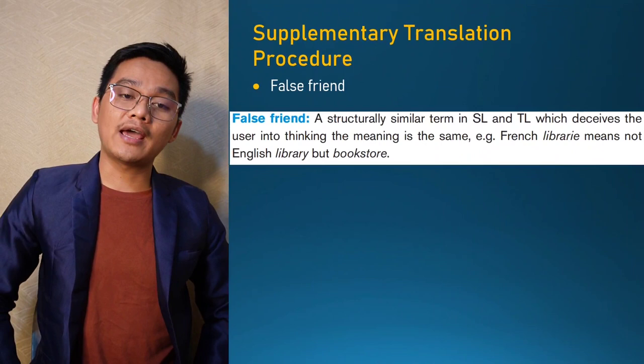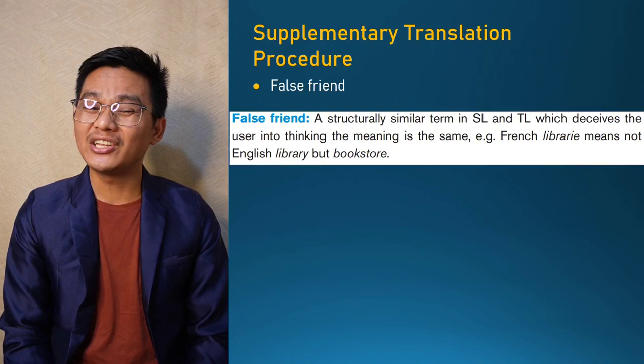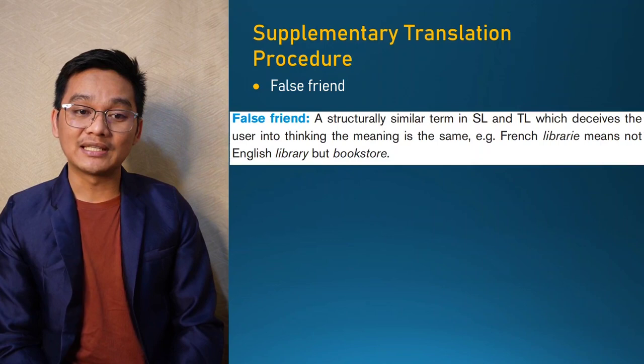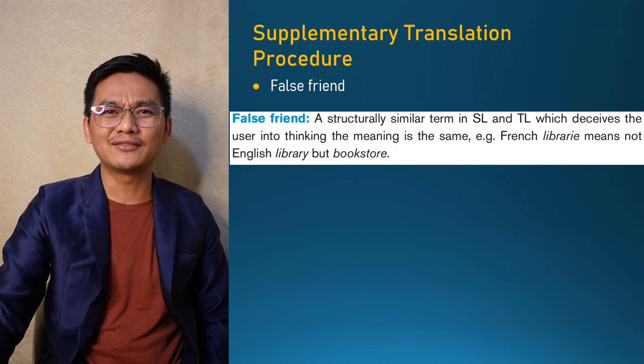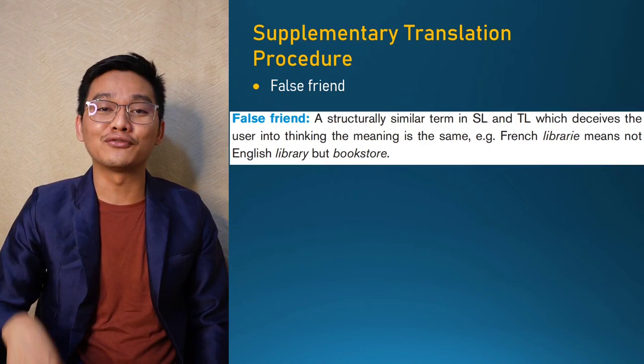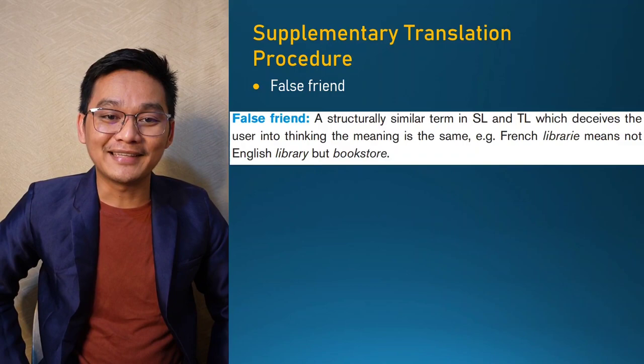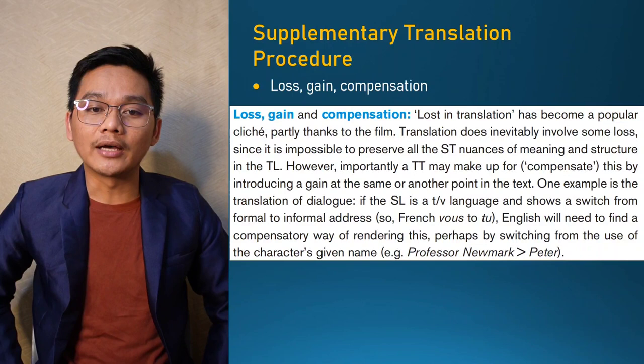False friend refers to structurally similar terms in the source and target language which deceive the user into thinking the meaning is the same. For example, the French word 'librairie' does not mean English 'library' — it means 'bookstore.' We need to be careful with false friends because they can mislead us about the nuance of meaning.